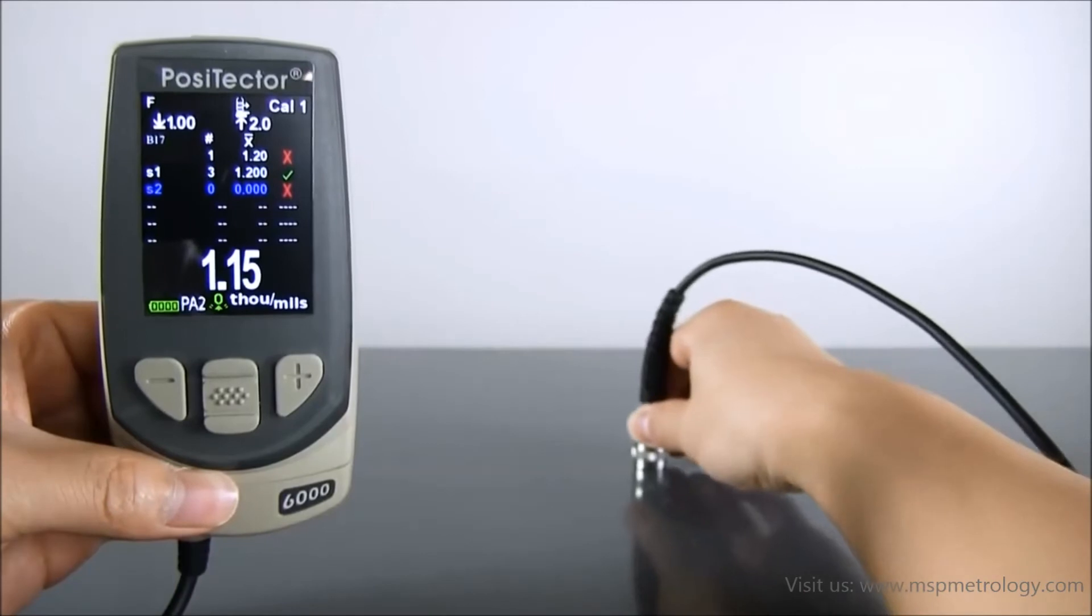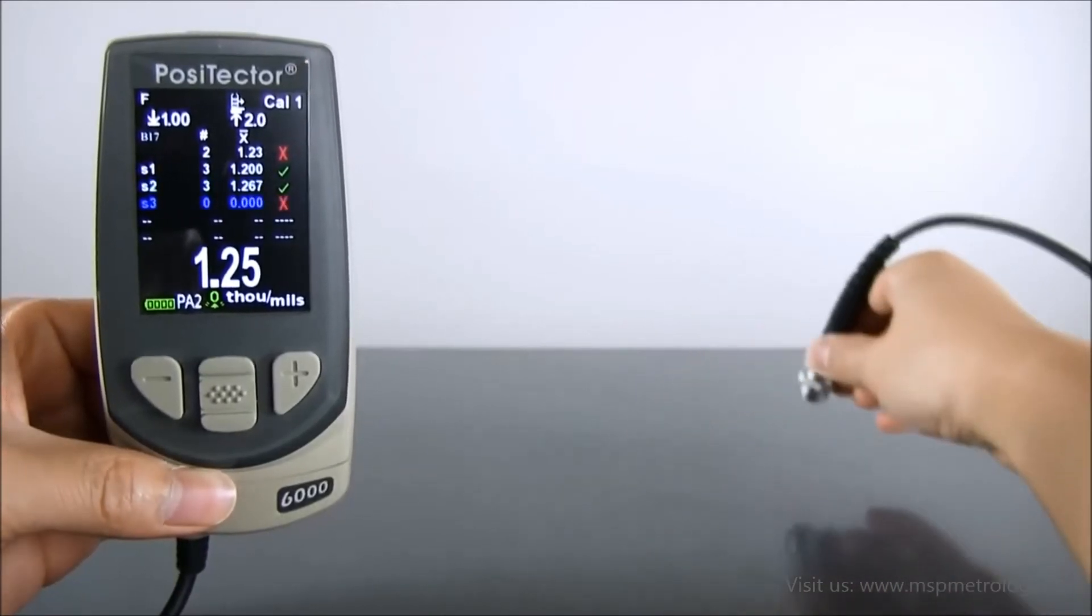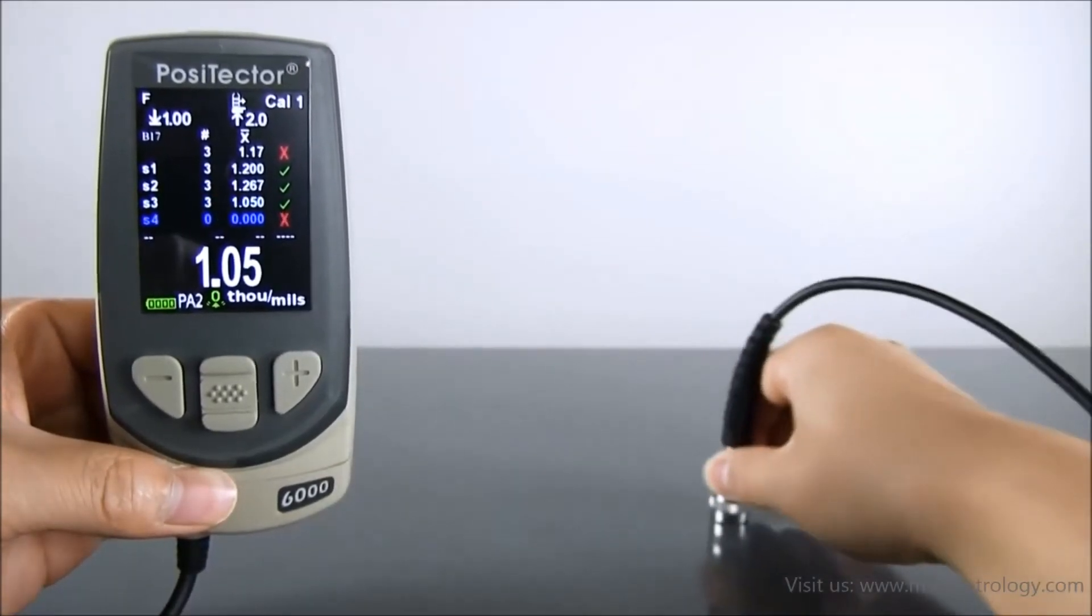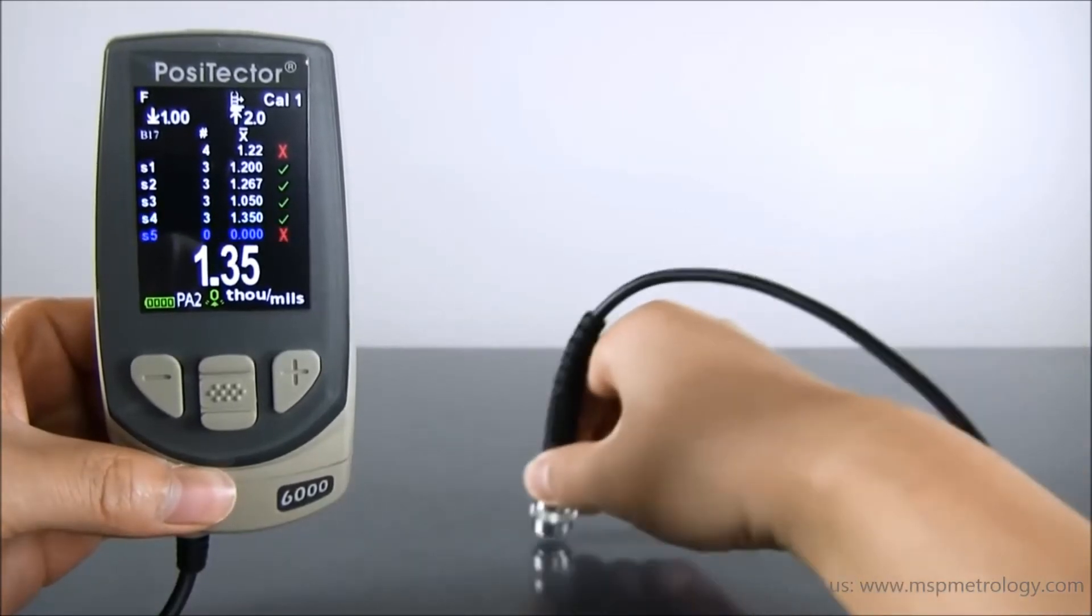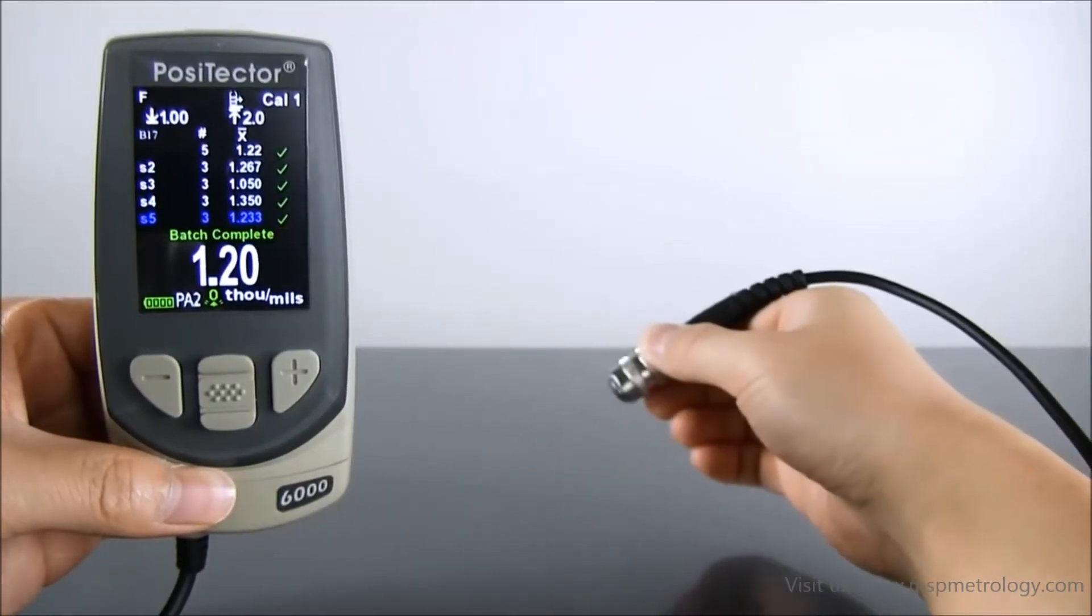For example, when PA2 mode and scan mode are enabled at the same time, the gauge automatically scans a set number of readings for each spot, proceeding to the next spot when the probe is lifted.